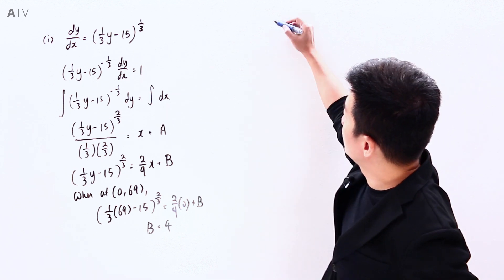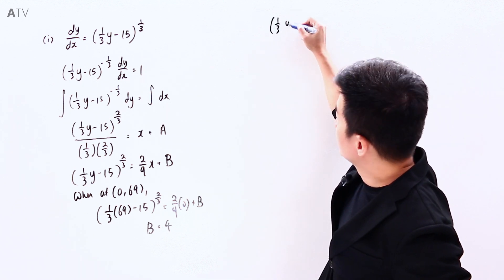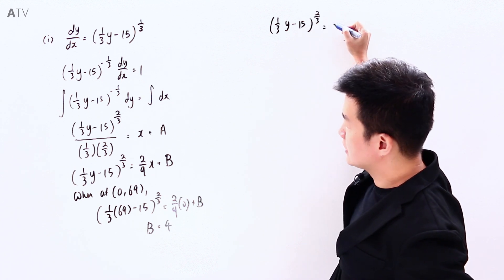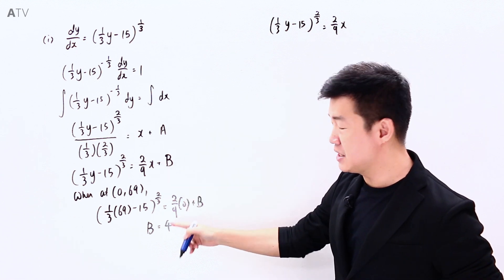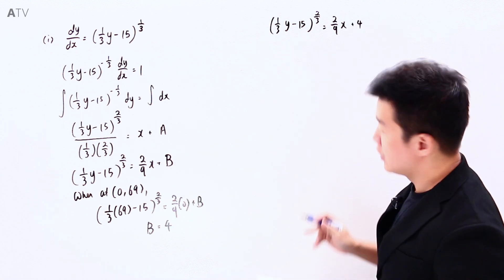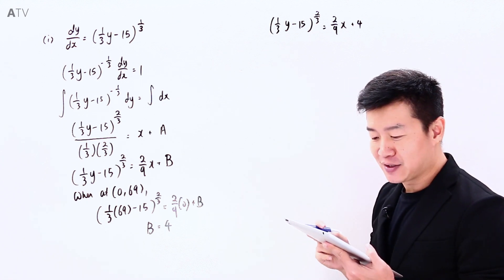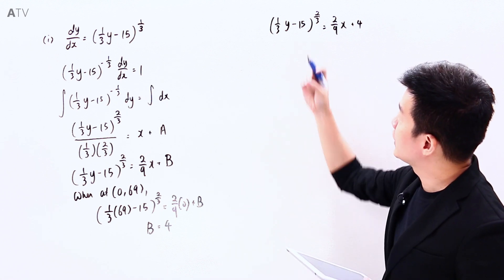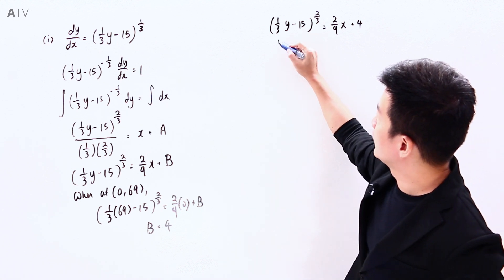So the equation we are working on is (1/3y − 15)^(2/3) equals 2/9 x plus B, and B equals 4, so plus 4. We need to find f(x) — and according to the question, f(x) is y — so we need to make y the subject. I have (1/3y − 15) equals (2/9 x + 4) to the power of 3/2.